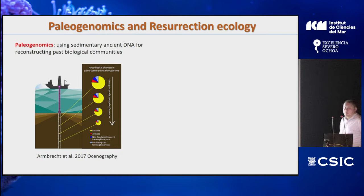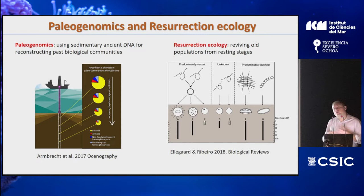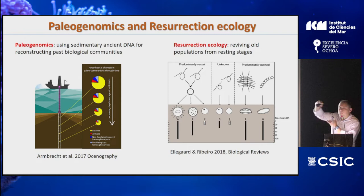Among all the proxies we can use in paleoecology, the ones I used most were the paleogenomic approach — using ancient DNA to reconstruct past biological communities — and also what we call resurrection ecology. Resurrection ecology consists of resurrecting species from ancient sediments, from resting stages that lived in the past, assuming that these resting stages were adapted to the conditions of the past. You can then compare the same species over time by resurrecting strains of the same species from different periods.